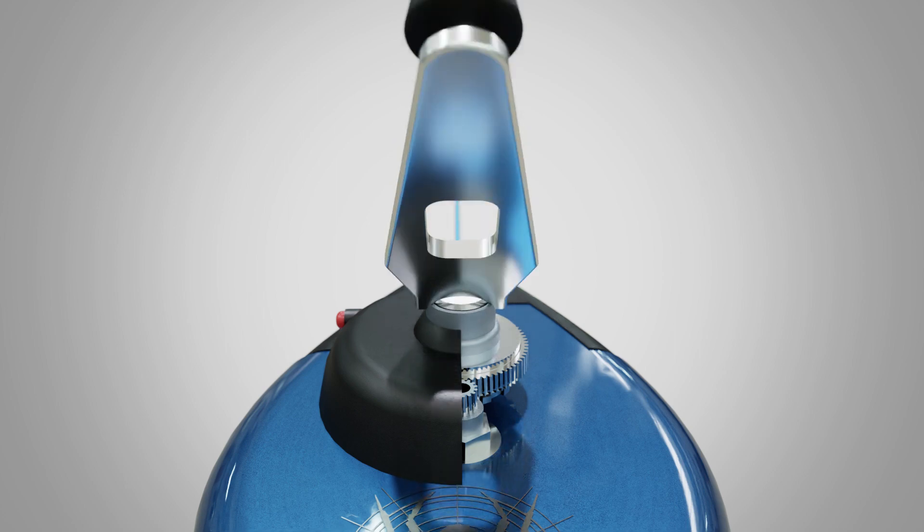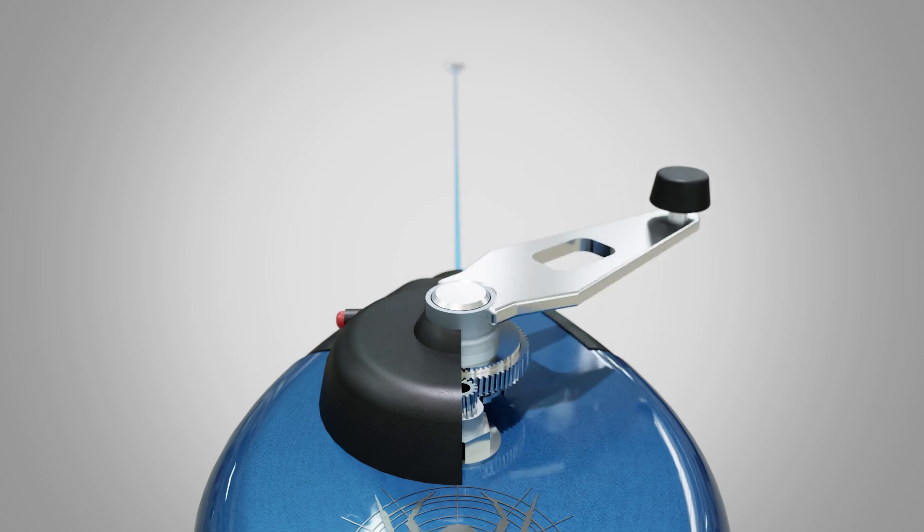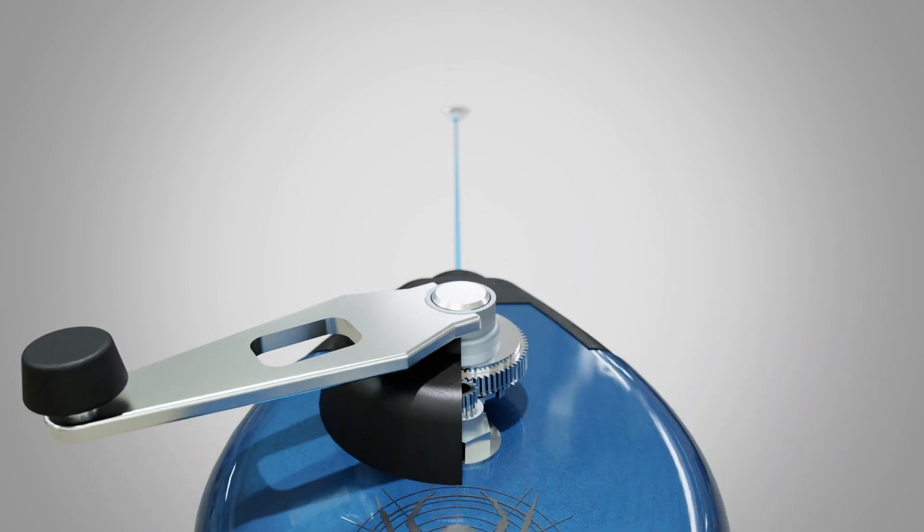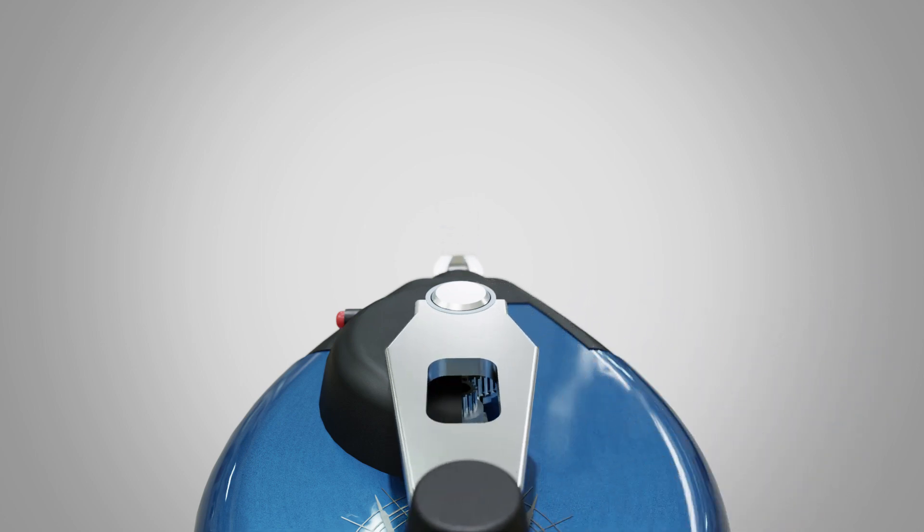The flip-out crank features a push-button release that allows for easy wind-up of the line. The chalk line itself is made from diamond braided cotton line that holds the chalk for highly visible snapped lines.